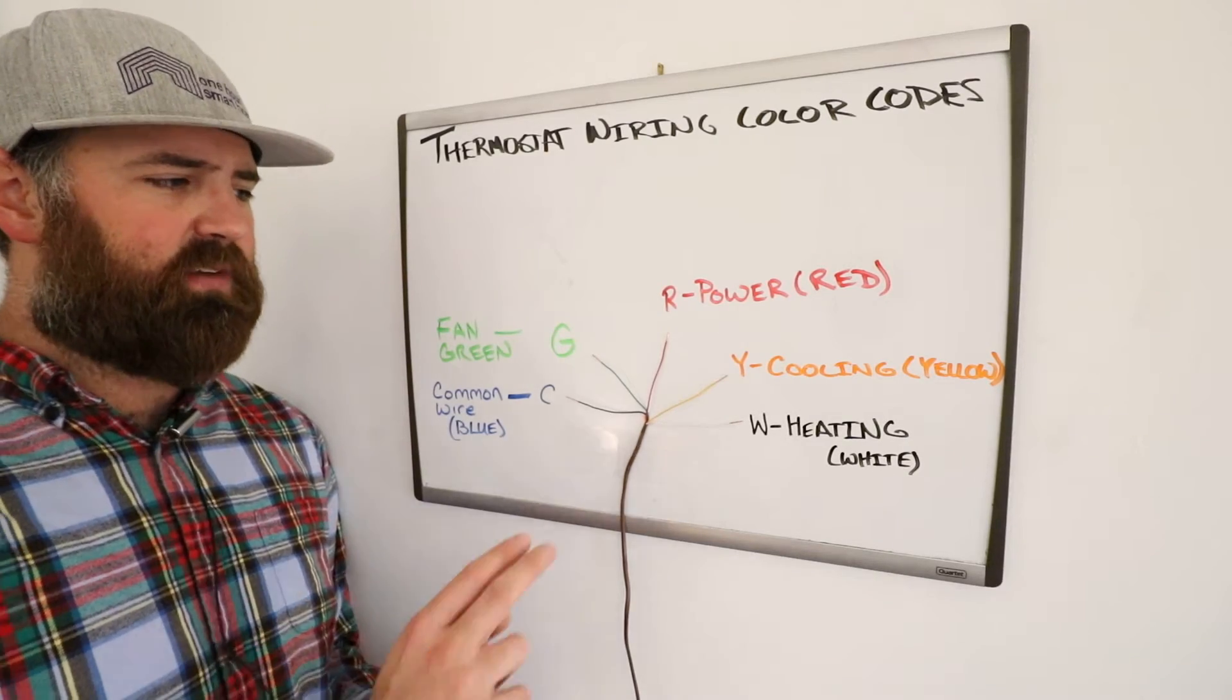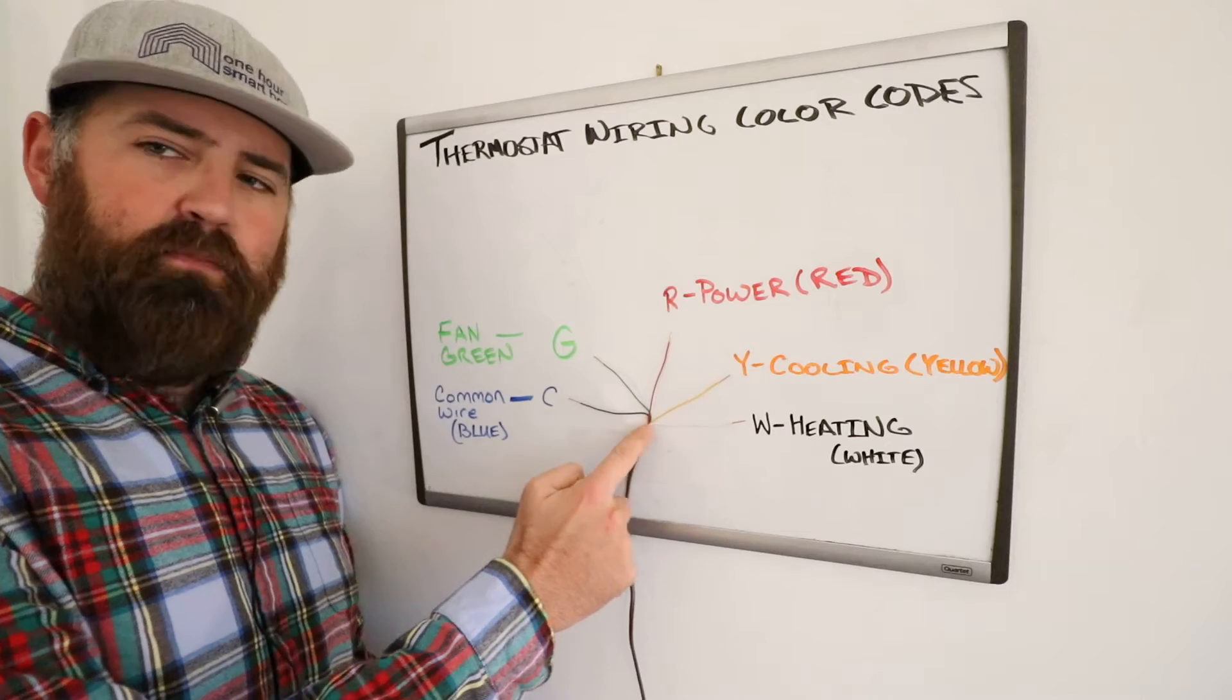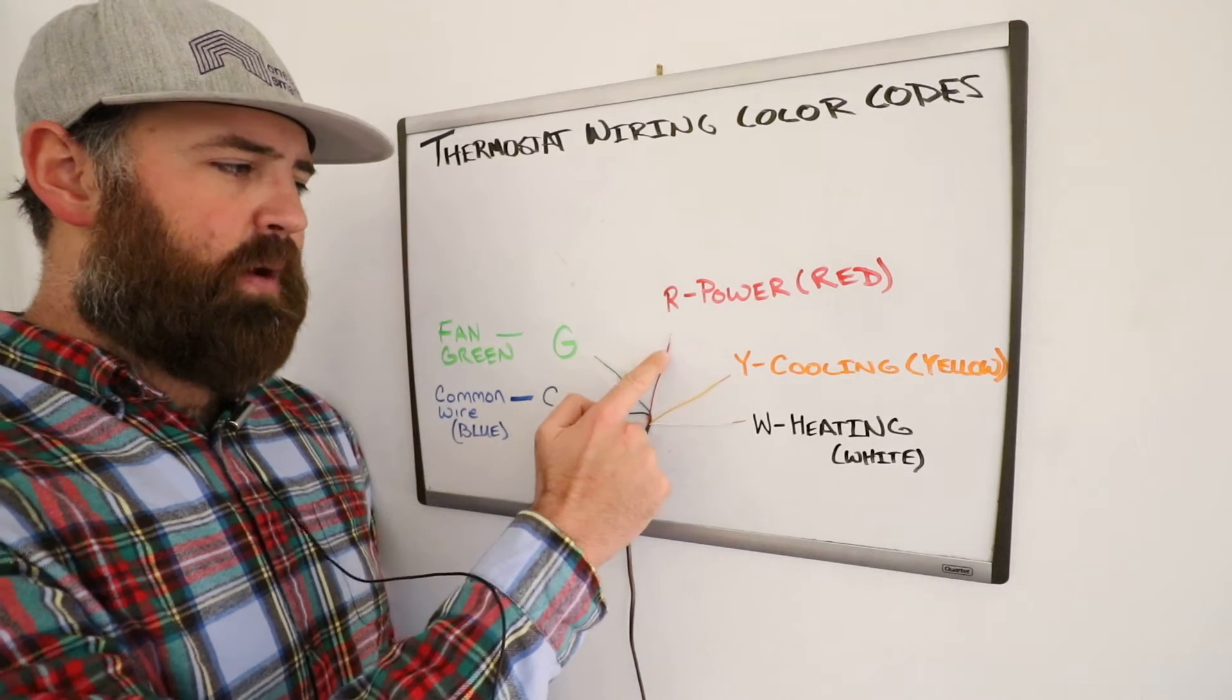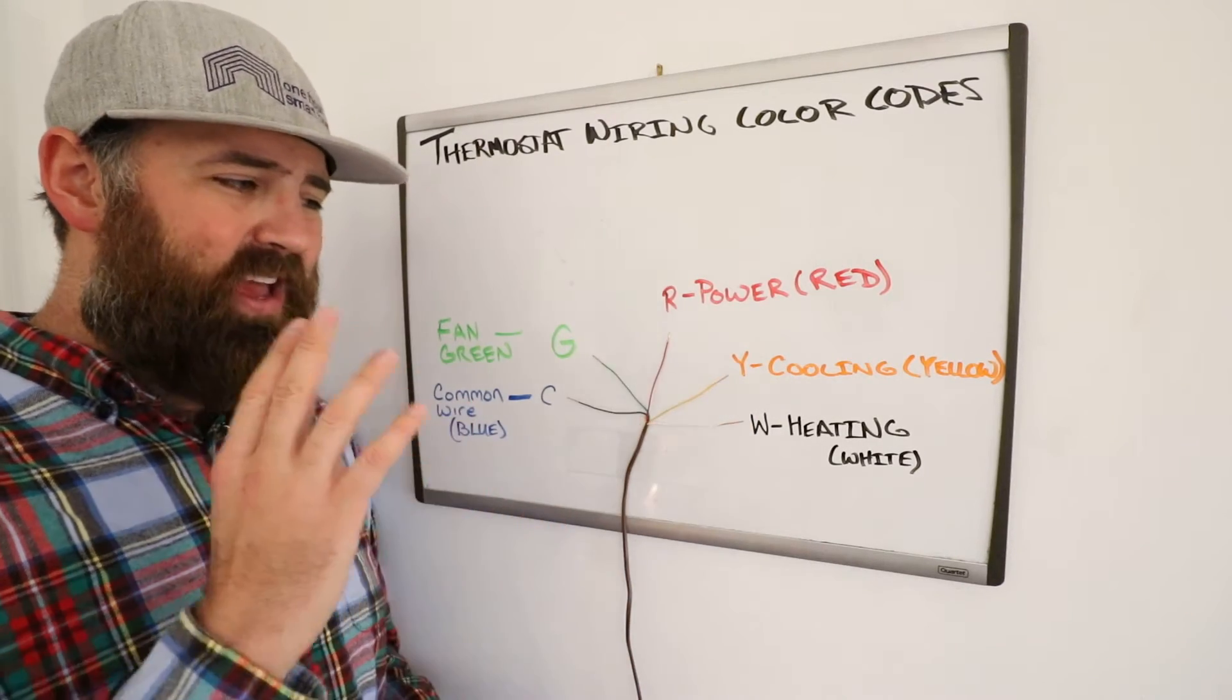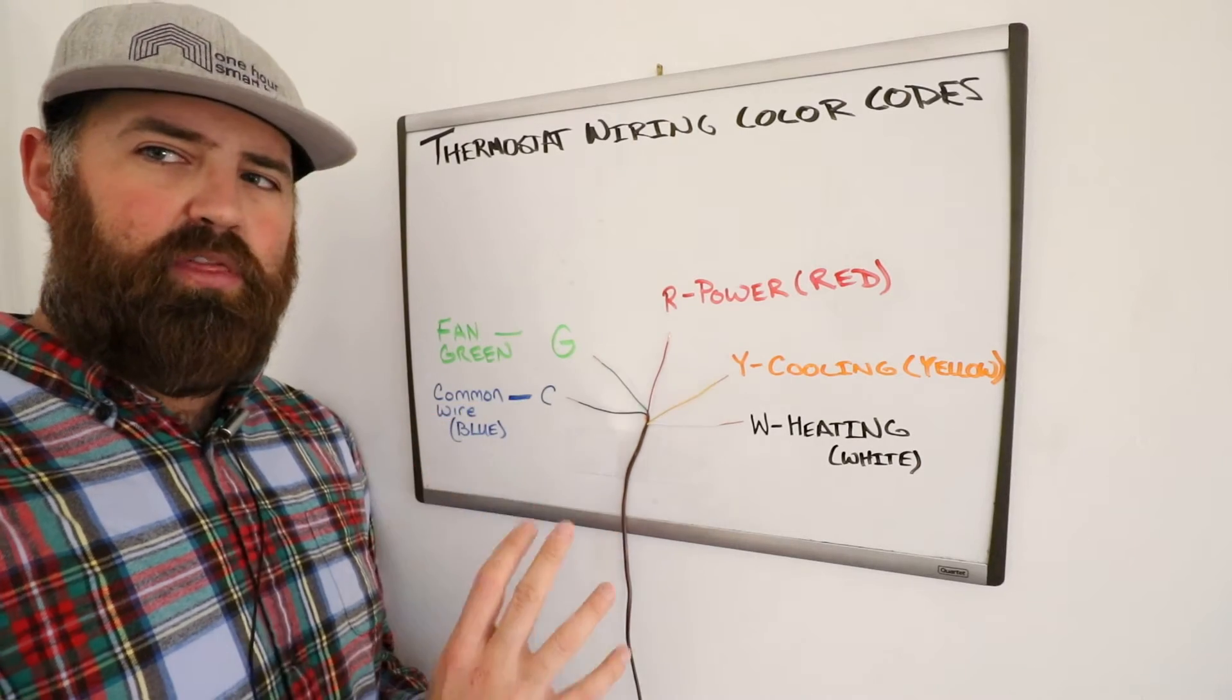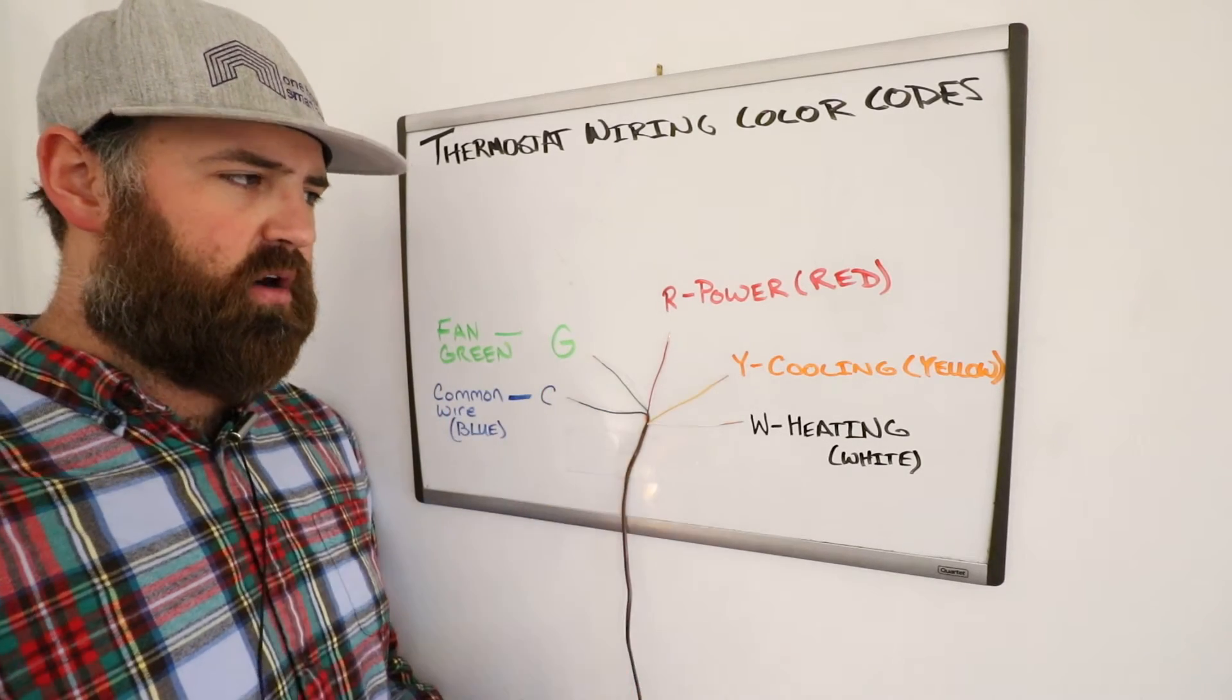And what happens when your thermostat activates any one of these other wires is that the power from this R-wire goes down, let's just say the Y-wire, and then back to your furnace, and that tells your furnace to turn on cooling, which is what the Y-wire means. Or if you had heating, the power from the R-wire would go down to the heat wire, and it would go back to your furnace or HVAC system and tell it to turn on the cooling. So the R-wire is the most important, and it is the only one that will have power on it until your thermostat has turned on or detected another mode of too hot or too cold and told your HVAC system to turn on or off.